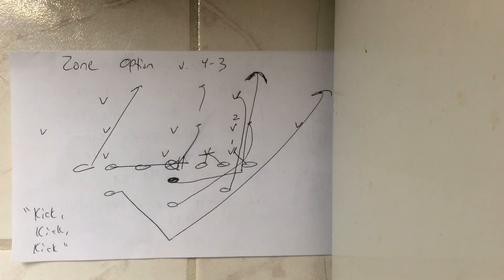So that's how zone option's run versus a 4-3. It morphs into kick, kick, kick, so it becomes zone kick with 10 blockers and a ball carrier. That's how you run it.